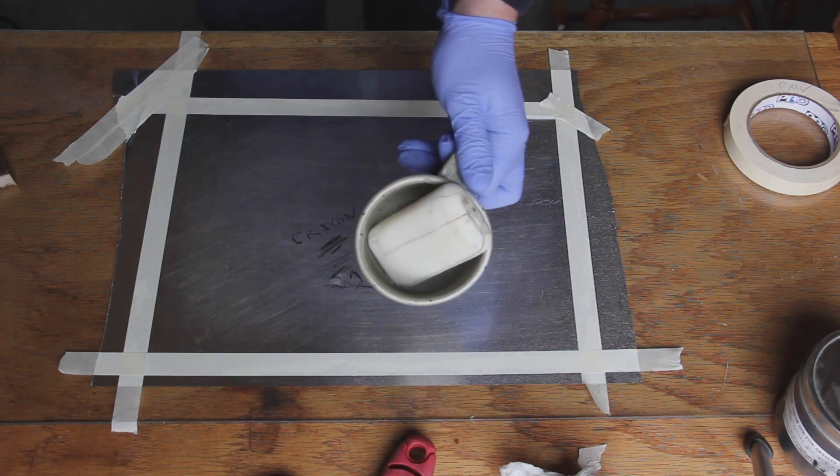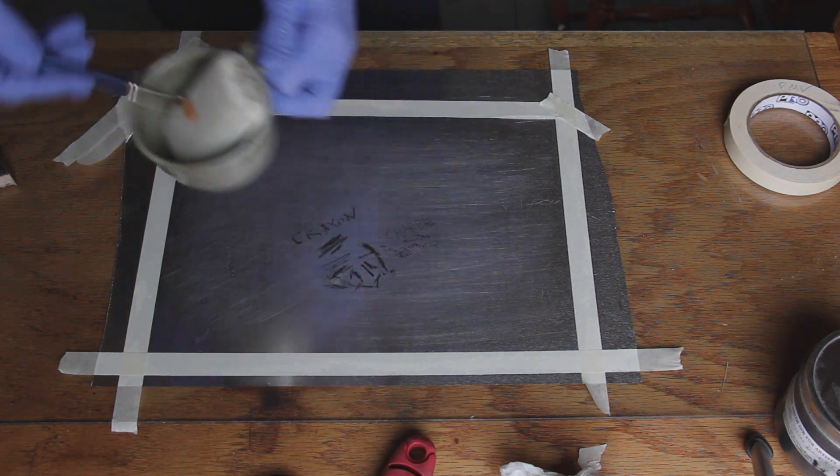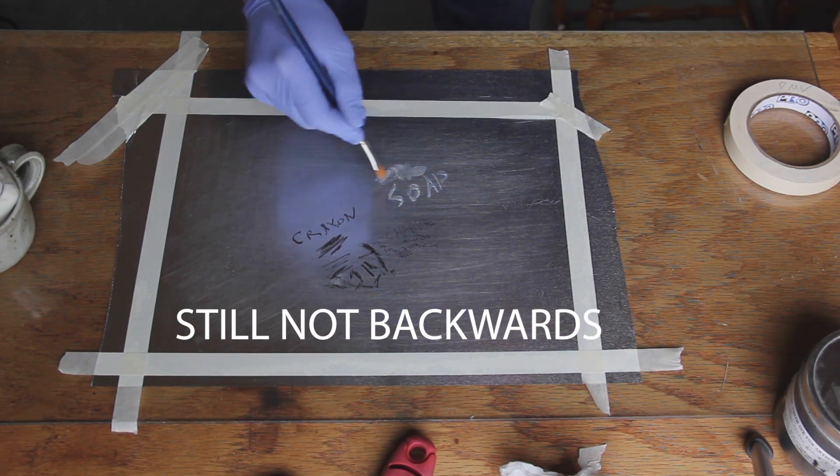Using the litho crayon now just drawing and writing again, trying to write backwards. Using the soap. The soap is pretty oily. It has fat in it and so it will repel water. Any of your drawing materials just have to repel water and you have to draw and write backwards.